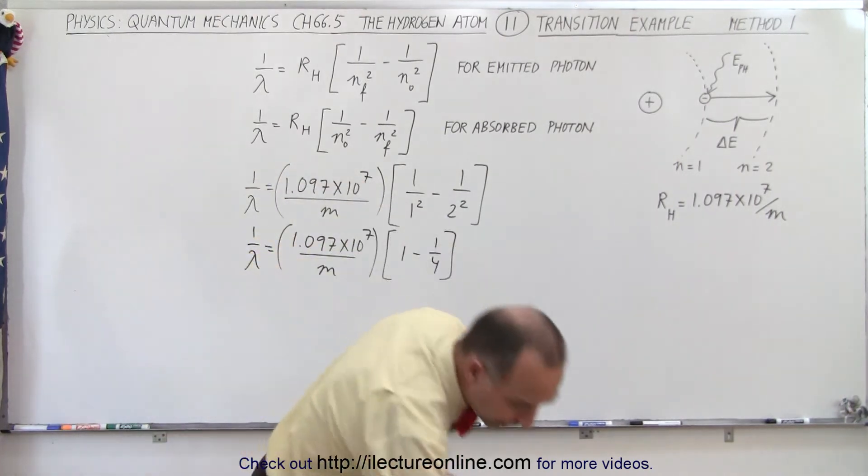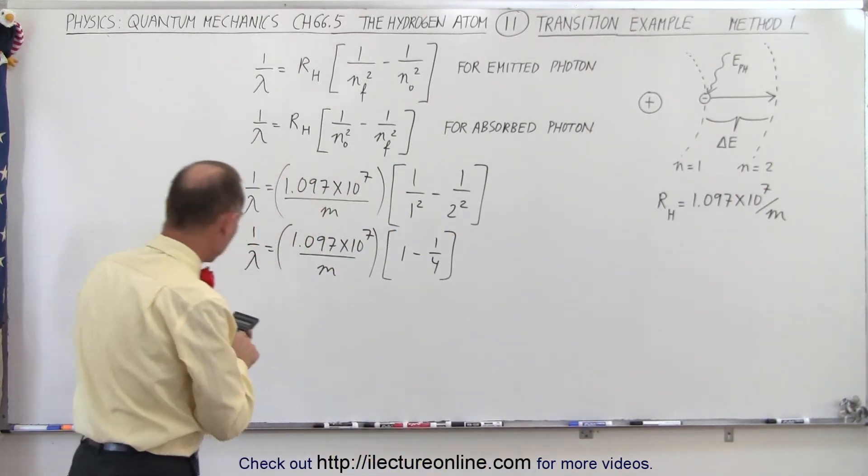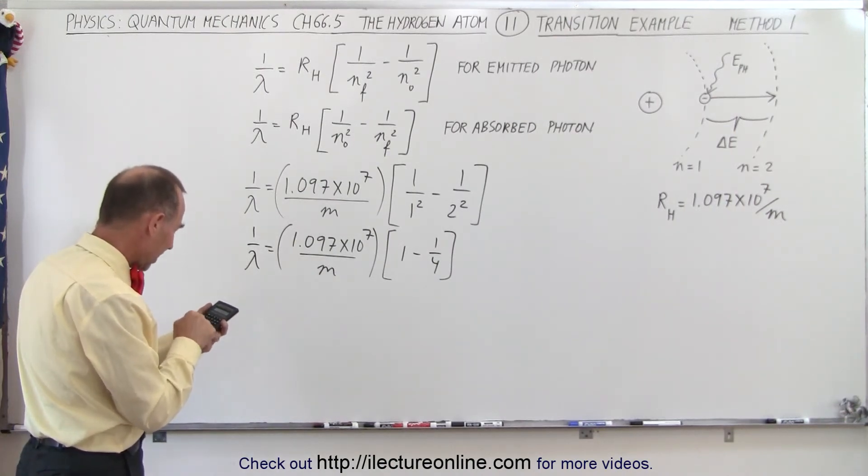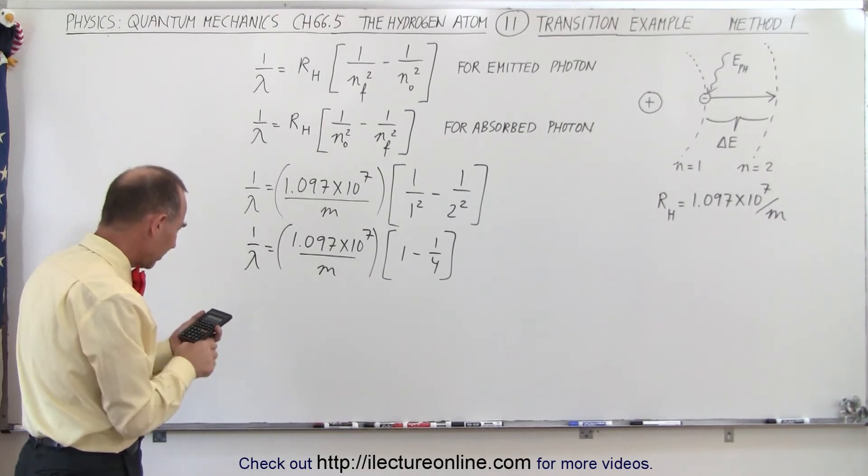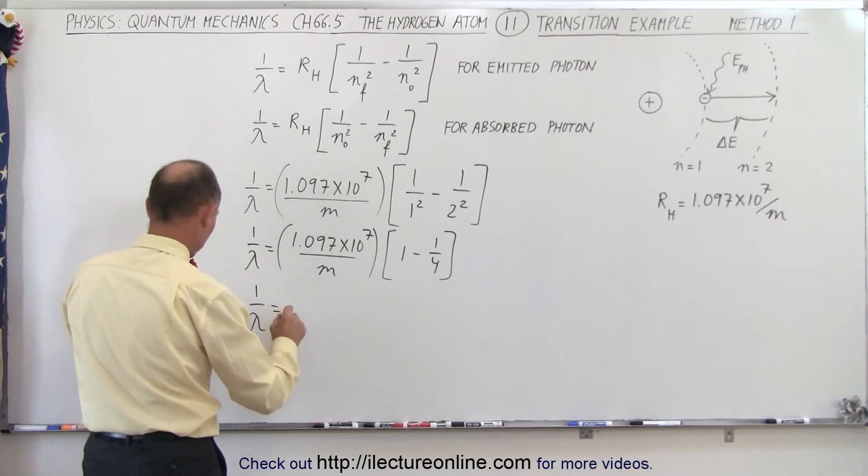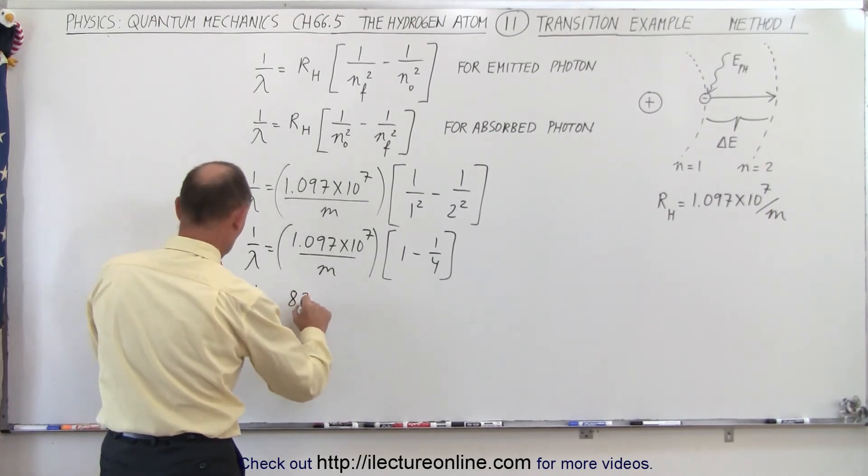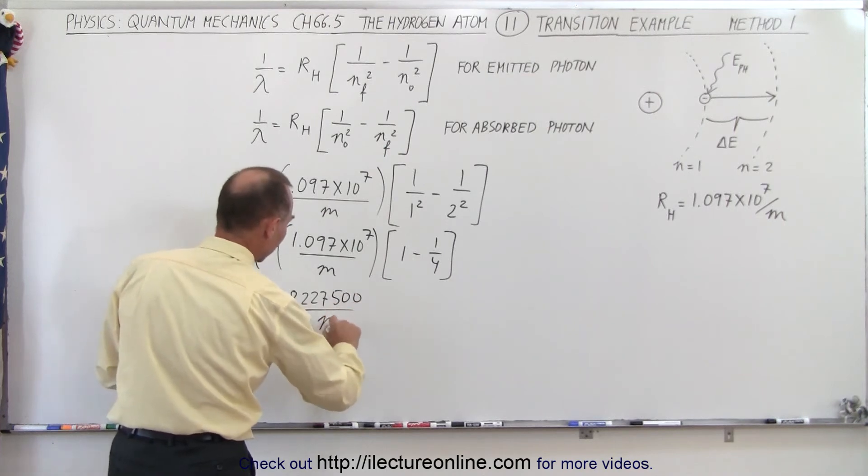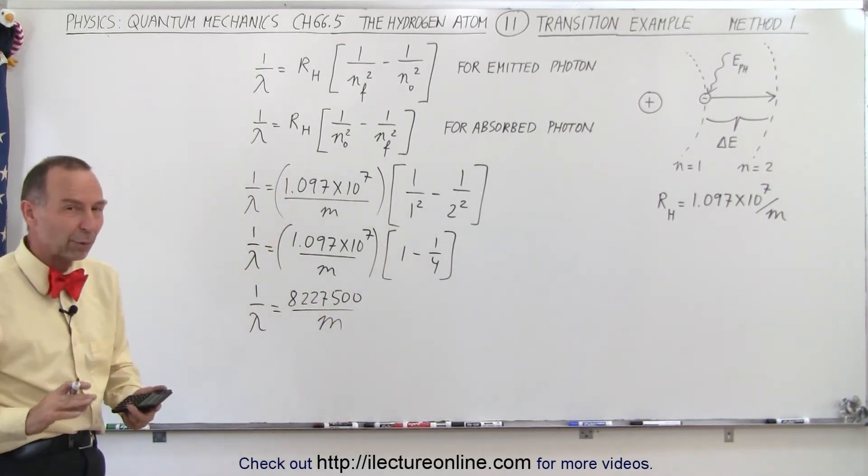So 3 quarters times that number, we end up with 1.097 e to the 7th times 0.75. That gives us 1 over lambda is equal to 8,227,500 per meter. And of course we're not looking for 1 over lambda, we're looking for lambda.